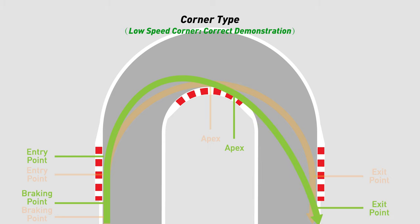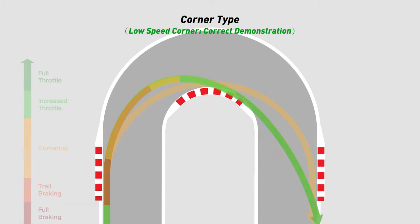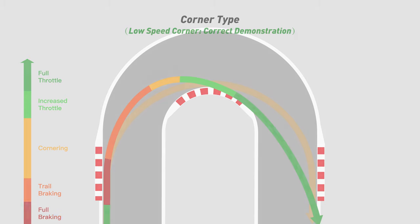In this way, the turning radius of the first half of the corner is smaller, but the turning radius of the second half will be larger. The corresponding cornering phase is shortened, and the increased throttle and full throttle phase will be earlier. By choosing this route, you lose some mid-corner speed, but the exit speed will be higher.